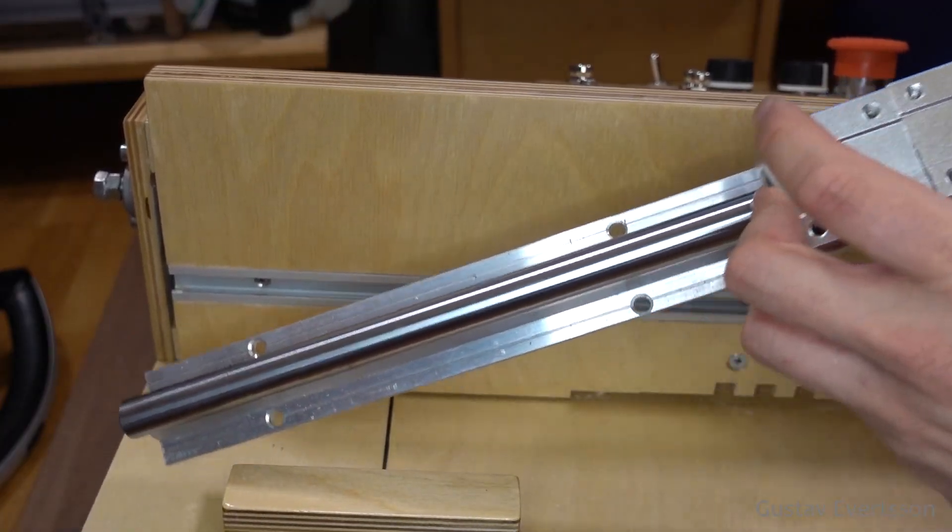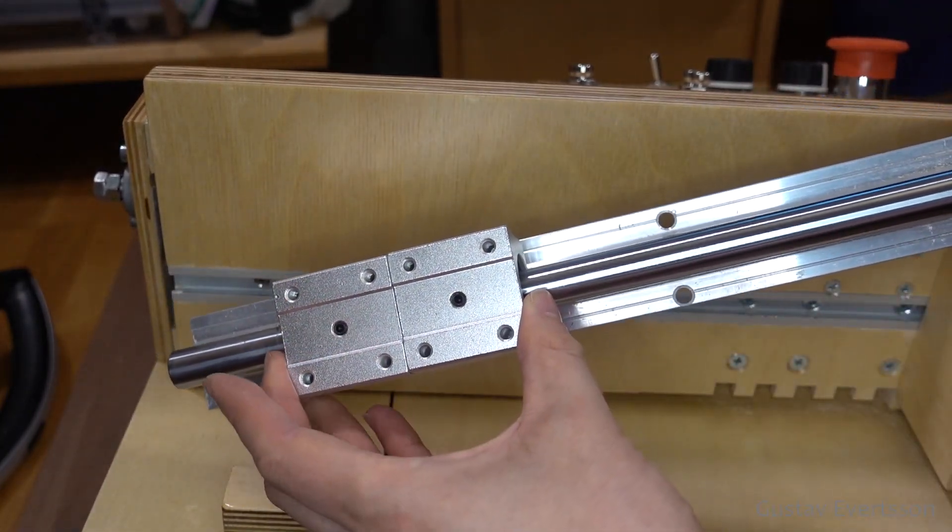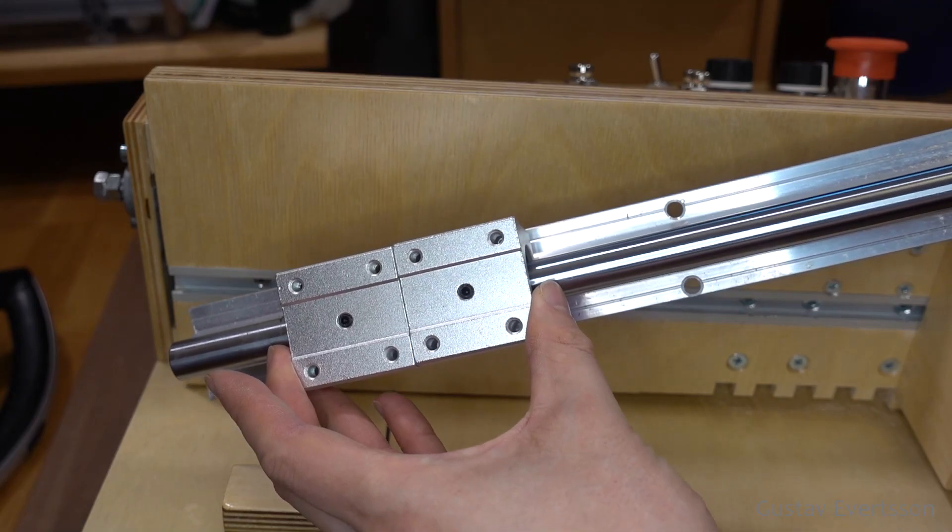A linear rail like this one is used to make smooth movement in one direction and still hold the work piece still when doing the cut.